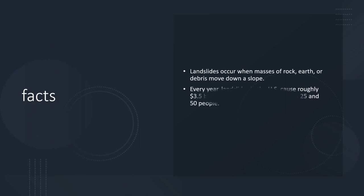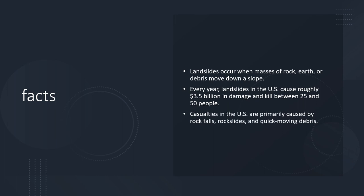Landslides occur when massive rock, earth, or debris moves down a slope. Every year, landslides in the U.S. cause roughly 3.5 billion dollars in damage and kill between 25 to 50 people. Casualties are primarily caused by rock falls, rock slides, or quick-moving debris. Some rockfalls may crush you, rock slides can carry you down a steep slope, and fast-moving debris hitting you may cause major brain injury or even death.